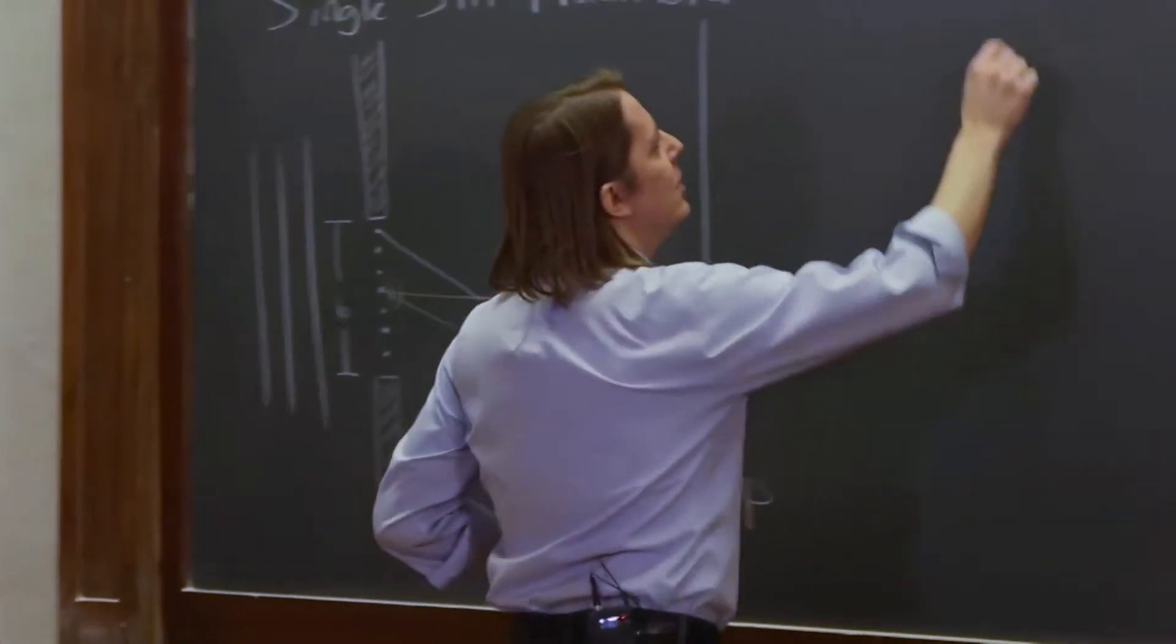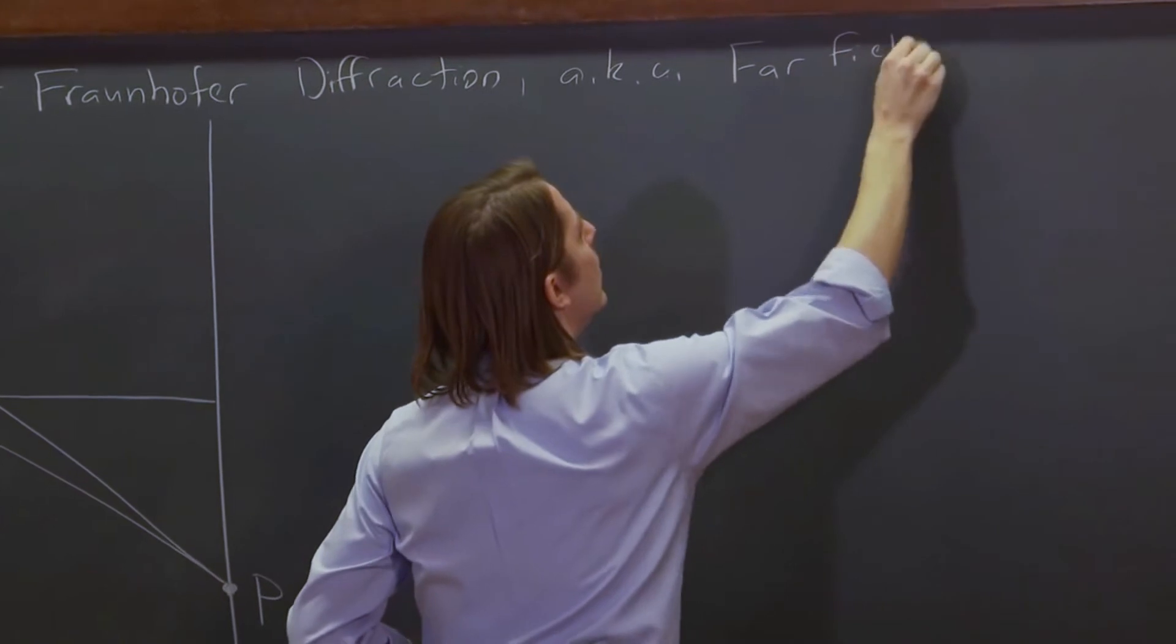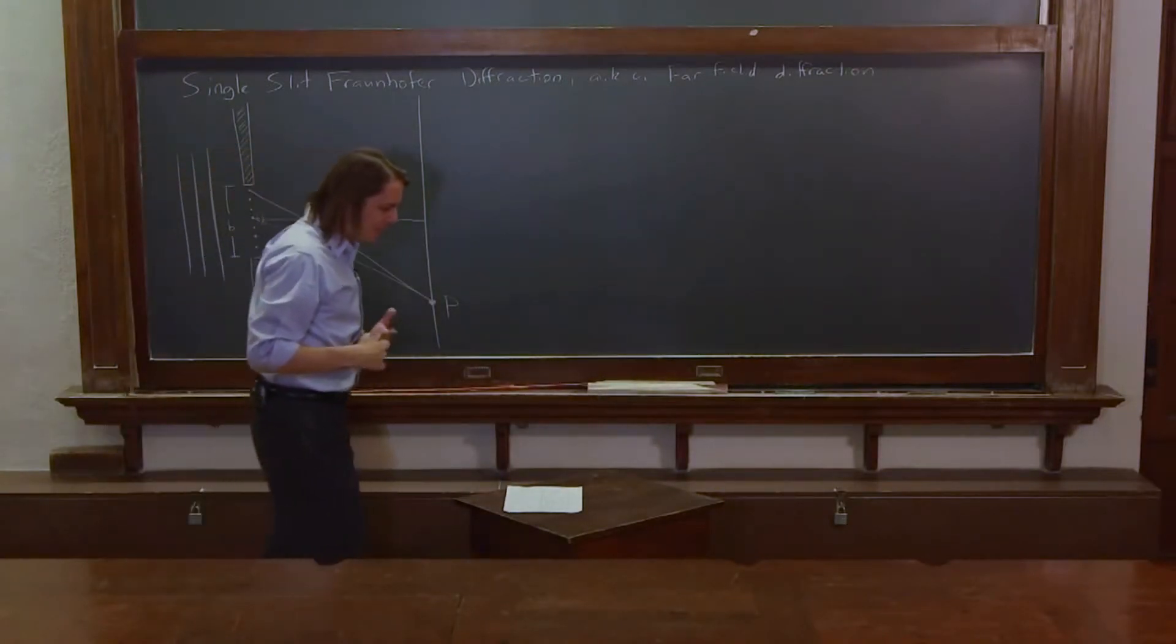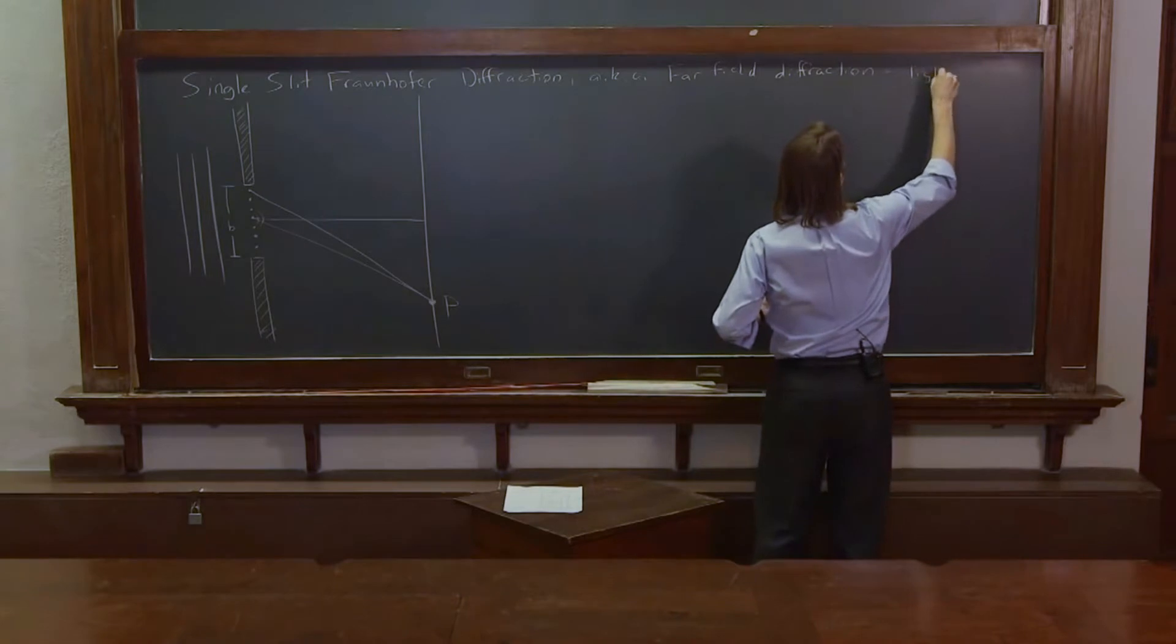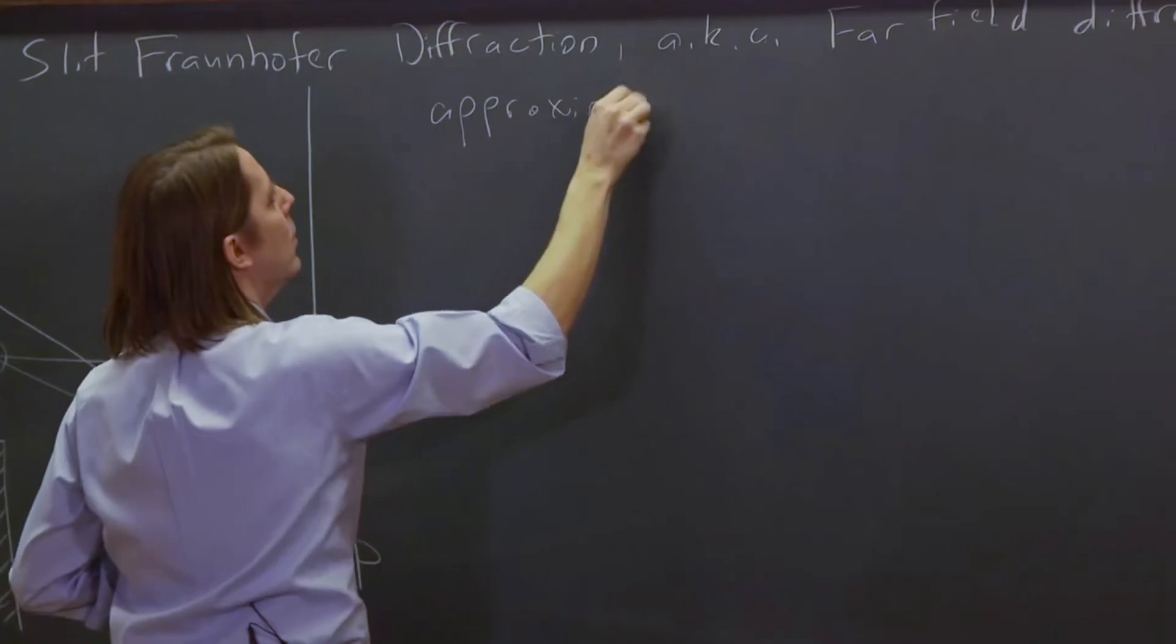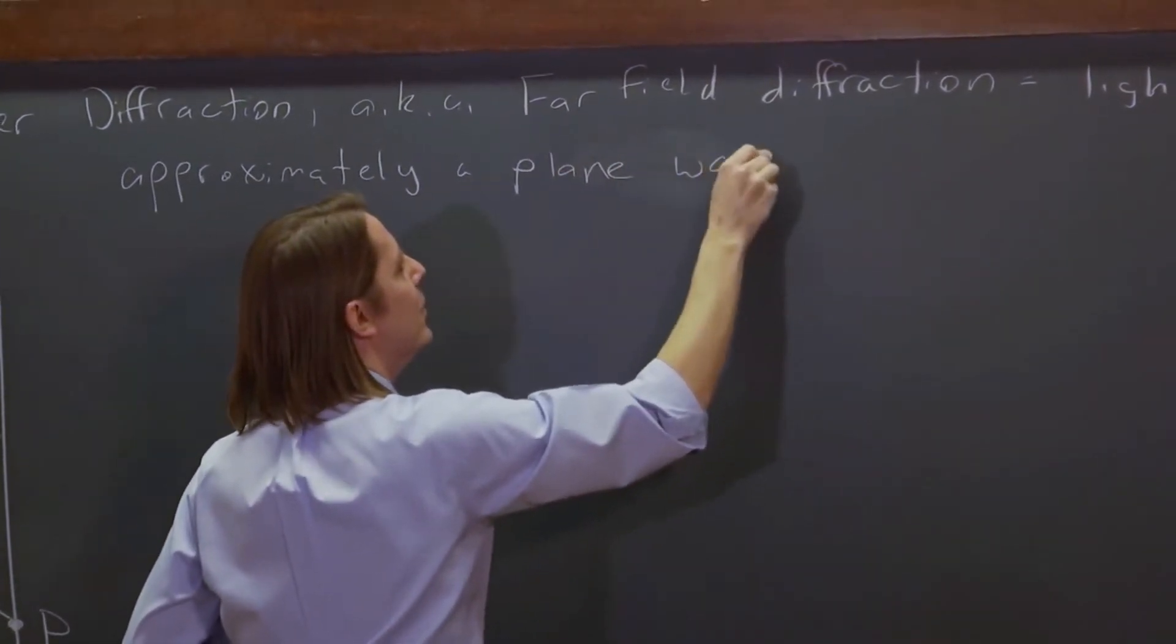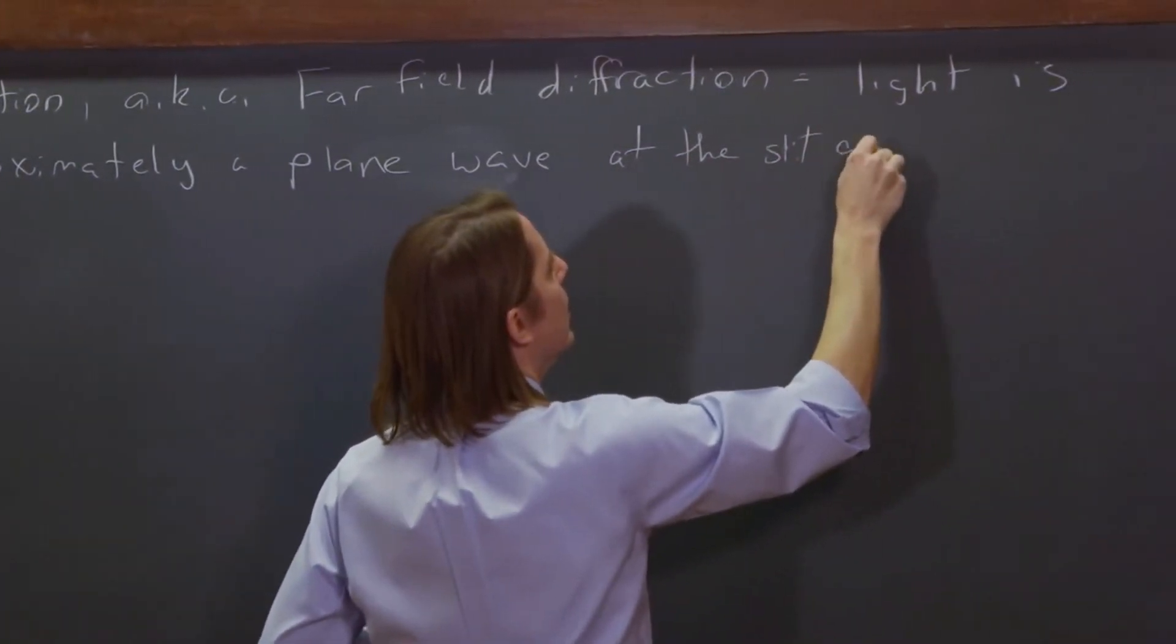So, another name for this is far-field diffraction. And by far-field, that has a technical meaning in terms of equations. But what it really means is that the light is approximately a plane wave. It's not a wave on the plane, it's a plane wave at the slit and the screen.